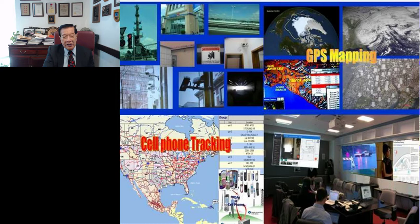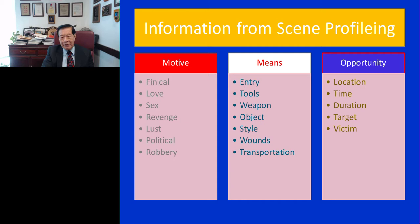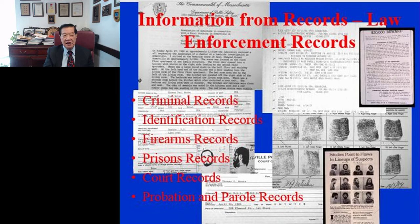We can look at motive — financial, love, sex, revenge, or political reasons — as well as means: how they entered the scene, how they accessed it, what tool was used, what weapon was involved, how many types of wounds, and what transportation was used. Opportunity involves looking at the location of the crime scene, timeline analysis, duration of the crime, the target, and the victim. With all those profiles, you can get information, then from criminal records, enforcement records, firearm records, and prison records, you can gather more information.